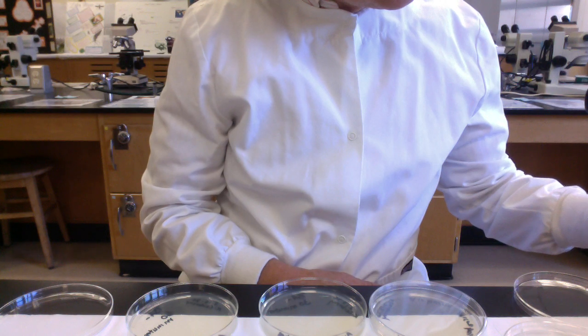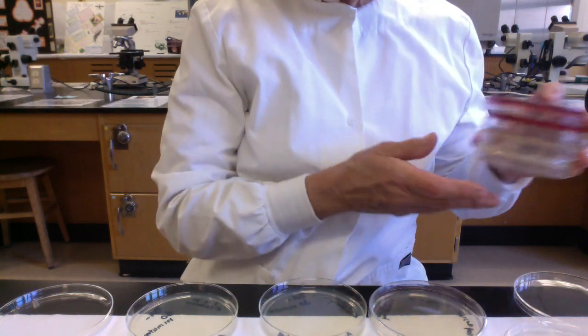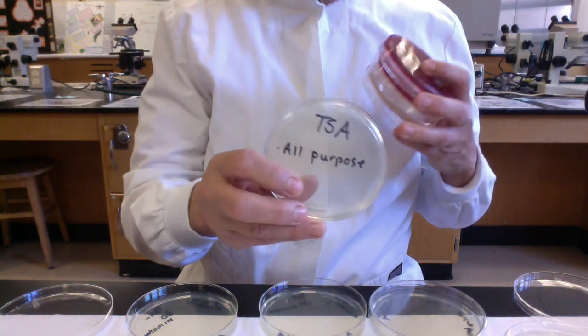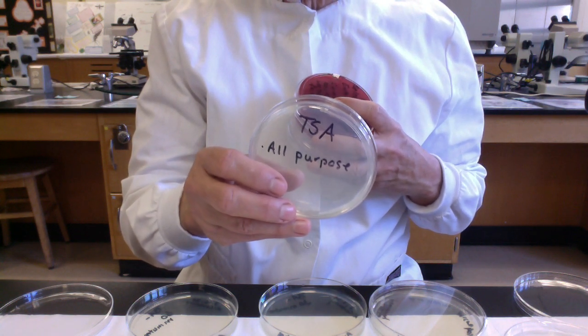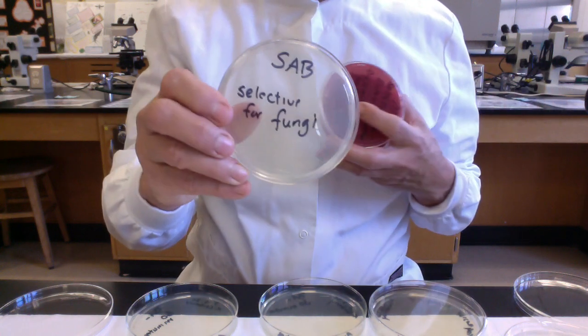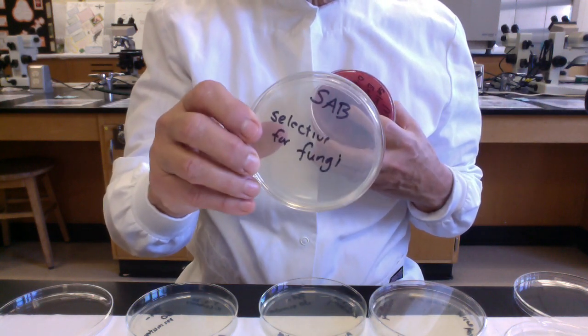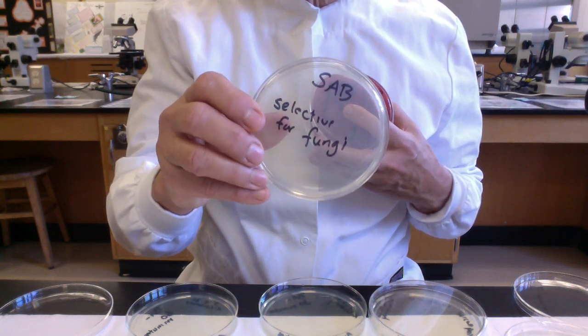Let's do a quick review. So remember, tryptic soy agar is considered all-purpose, will grow a wide range of bacteria and fungi. The Sabouraud dextrose is selective for fungi, so we would expect yeasts and molds to grow.